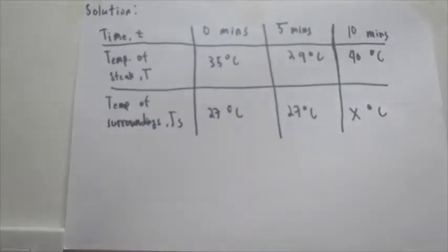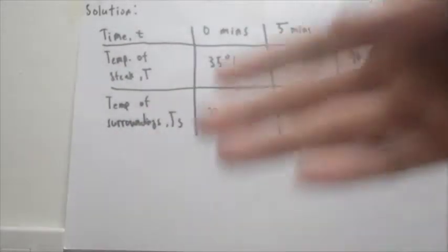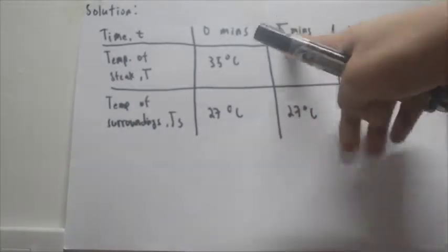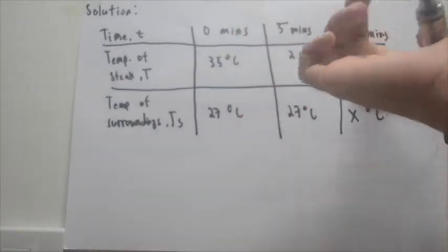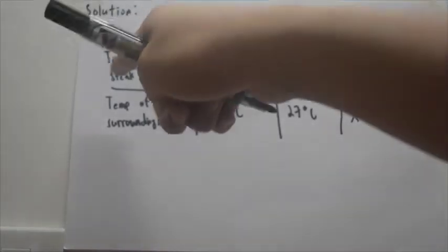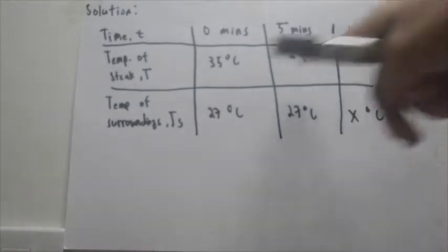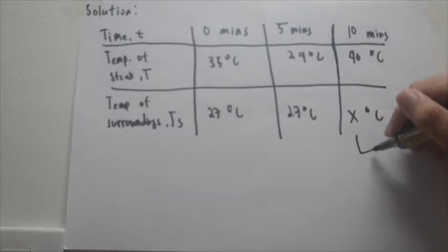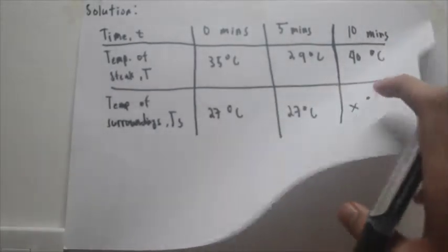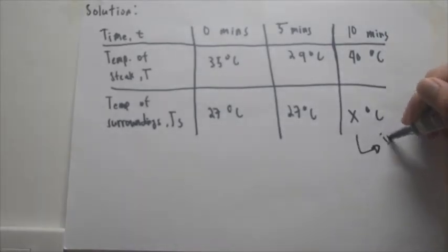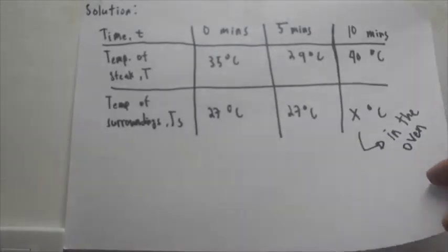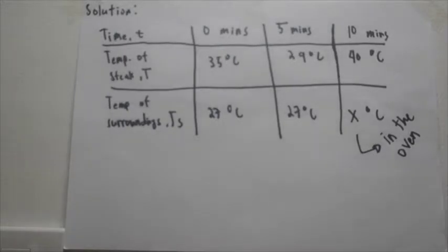The problem is instantaneous. So after 5 minutes again — which is actually 10 minutes — the temperature of the steak is 40 degrees Celsius, and the temperature of the surroundings, which is in the microwave oven, is x degrees Celsius. We don't know.